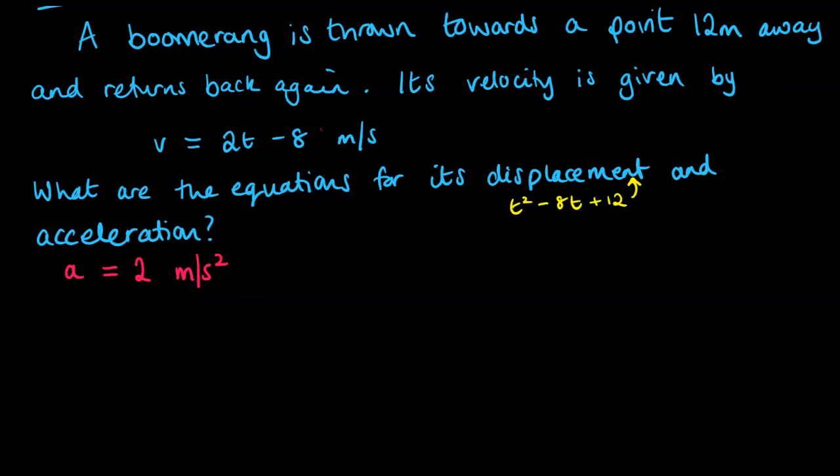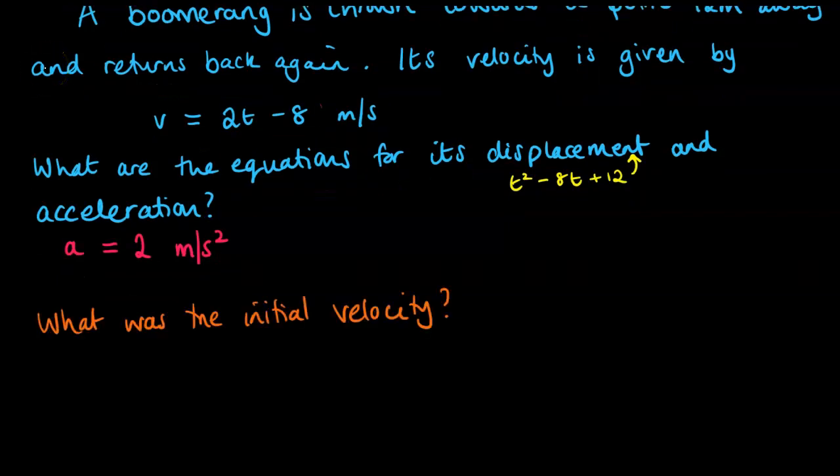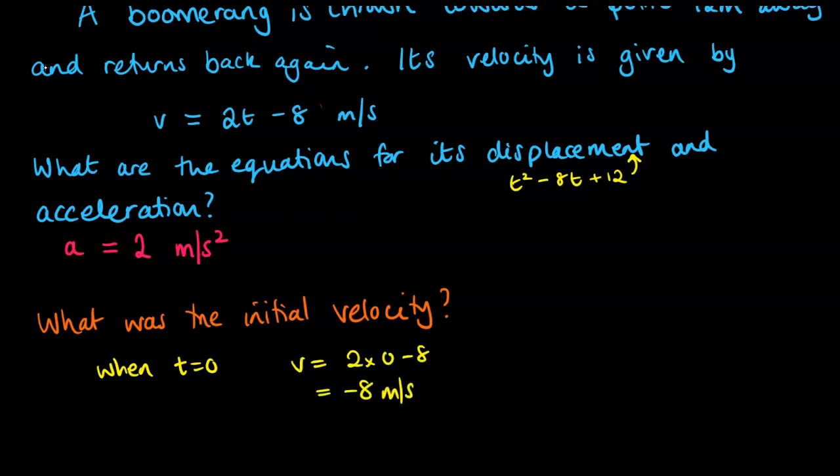With that information, you might be asked some other questions, something like what was the initial velocity? So if we're looking for initial velocity, that's right at the beginning. So when t is 0, so no time has passed, v would equal 2 times 0 minus 8. So our initial velocity would be minus 8 meters per second.